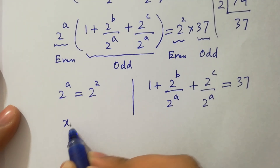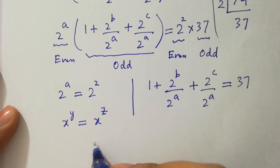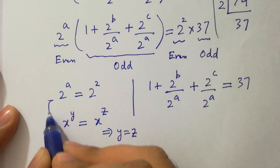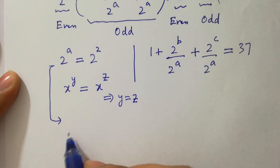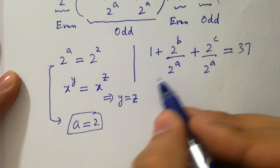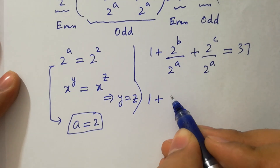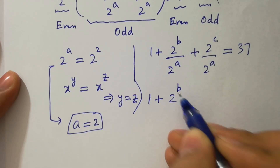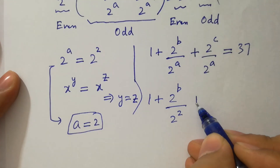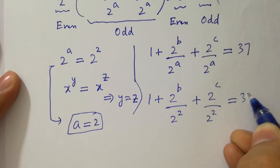Since x to the power y equal to x to the power z implies y equal to z, so here we have the value of a equal to 2. Put this value into the equation: we have 1 plus 2 to the power b over 2 to the power 2 plus 2 to the power c over 2 to the power 2 equals to 37.